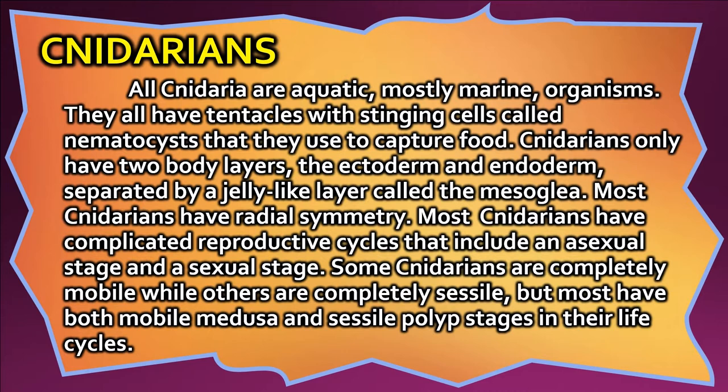Cnidarians have an outer and inner layer separated by a jelly-like layer called the mesoglea. Most cnidarians have radial symmetry. Most cnidarians have complicated reproductive cycles that include an asexual stage and a sexual stage. Some cnidarians are completely mobile while others are completely sessile, but most have both mobile medusa and sessile polyp stages in their life cycles.